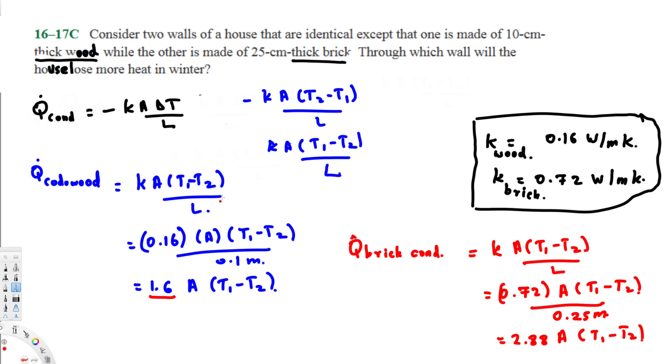Here we have to compare these two numbers: 1.6 and 2.88. This is definitely higher than this one, right? Brick is higher than this one. Therefore, we can conclude that the house loses more heat in winter through the thick brick.